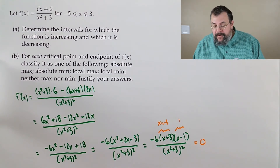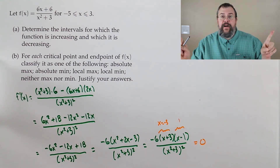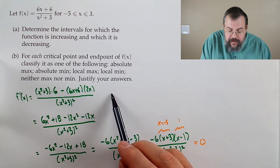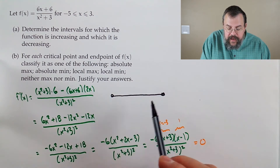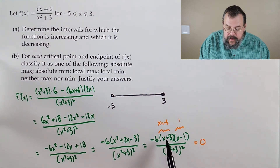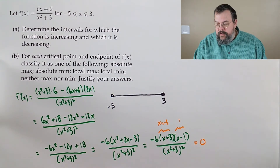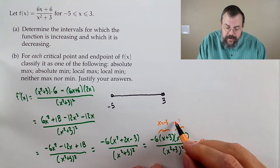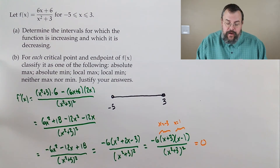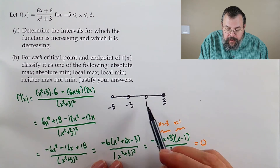Setting the numerator equal to zero: x plus 3 equals 0 gives x equals negative 3; x minus 1 equals 0 gives x equals positive 1. So we have two critical points: negative 3 and positive 1. Drawing our number line, we include the endpoints negative 5 and positive 3 as well. Both critical points negative 3 and positive 1 lie within our interval, so we include them.